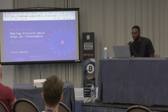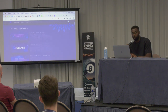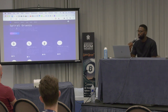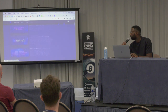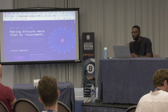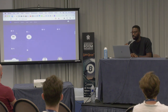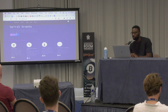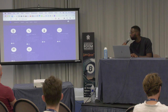My name's Connor. I work at an organisation called Spiral. We're an organisation focused on helping bring about mass adoption for Bitcoin and making it the native currency for the internet — making Bitcoin more than an investment. One of the ways we do that is our grant programme: we fund over two dozen designers and developers, all working on free open source Bitcoin projects.